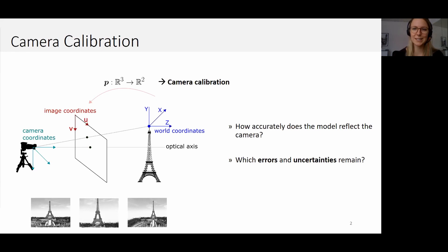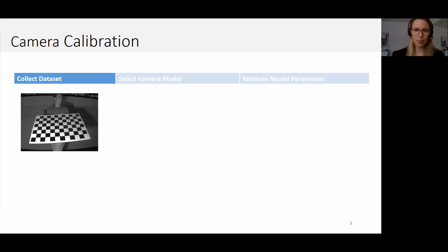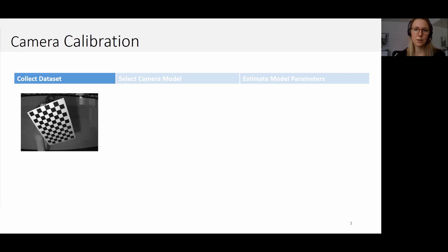What I'm going to talk about today is how certain am I that my model — the result of my calibration — actually reflects the real camera, and which errors and uncertainties remain. In a typical calibration workflow, you first collect a number of images with the camera you want to calibrate. Typically, people use well-defined calibration targets such as a chessboard, where the corners are easily detectable and you know the position of each corner relative to the board.